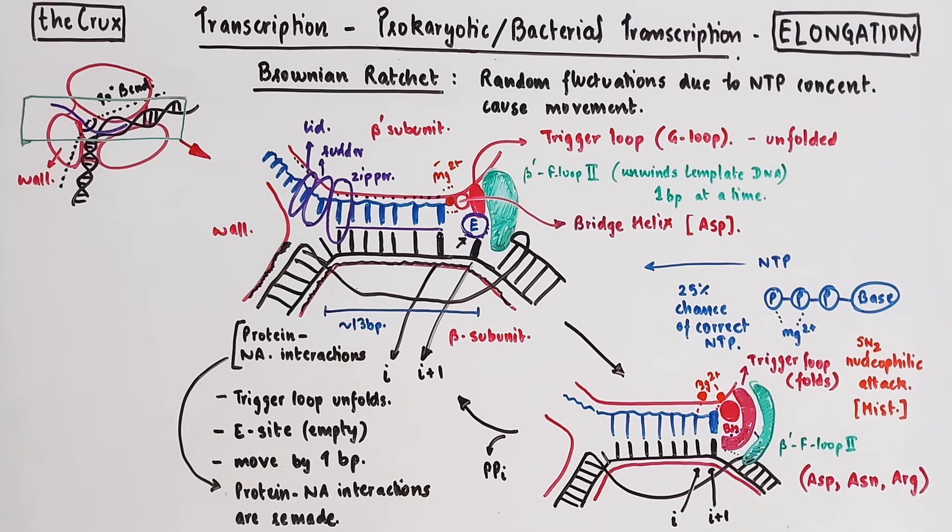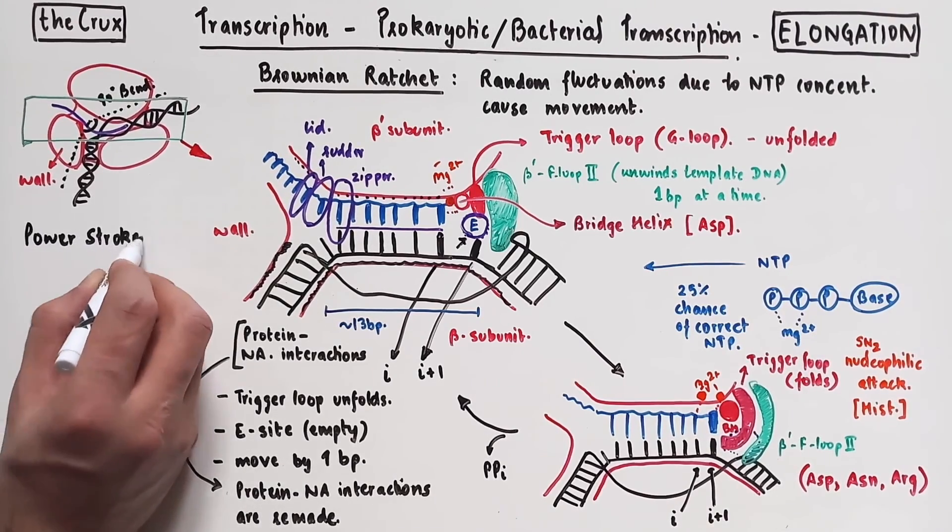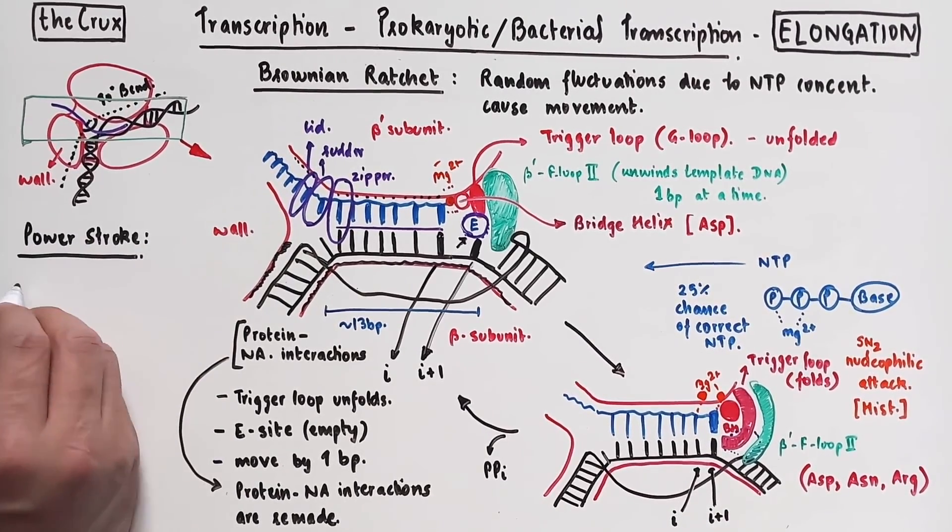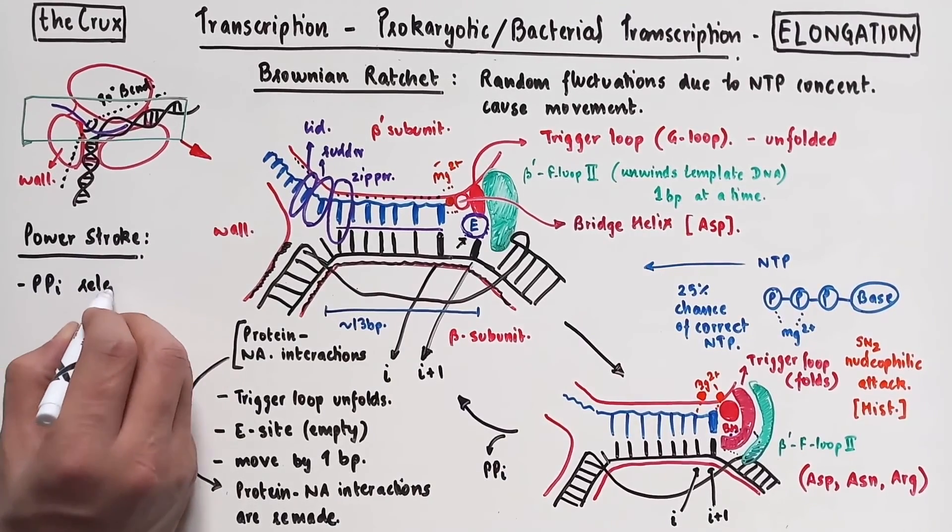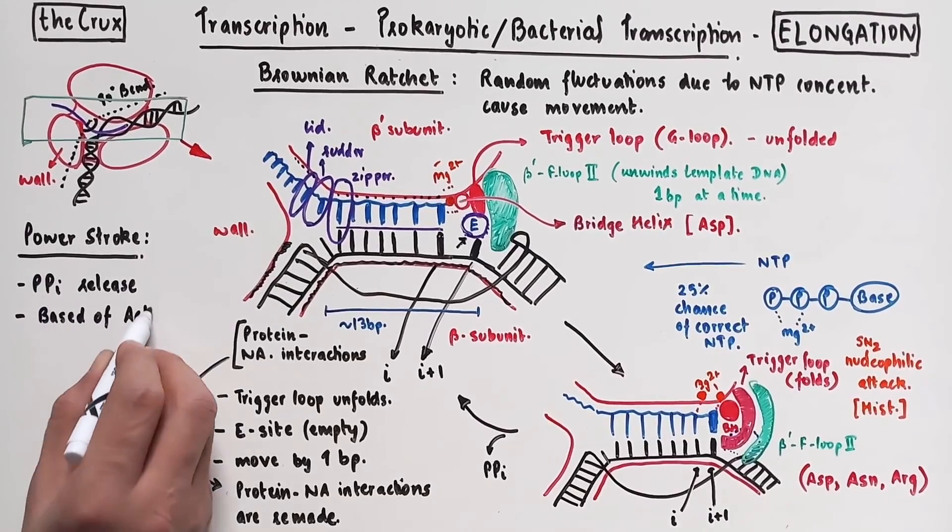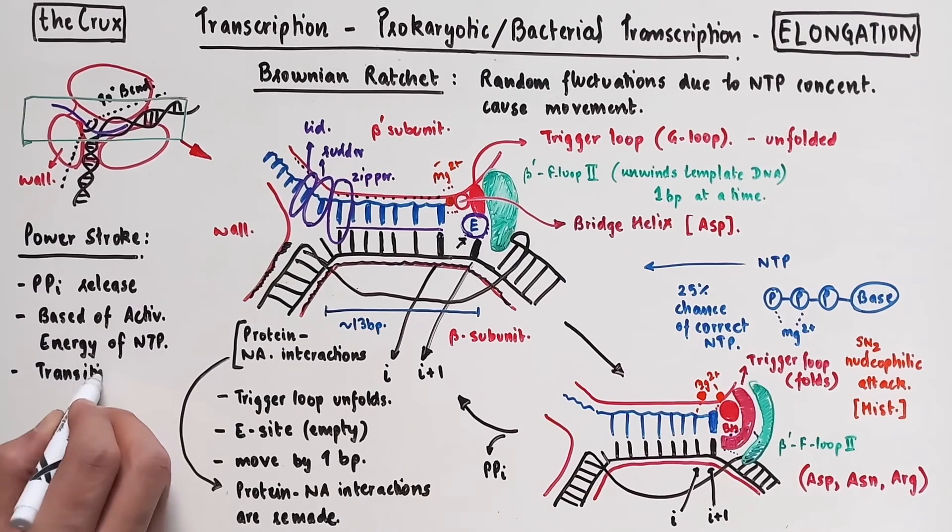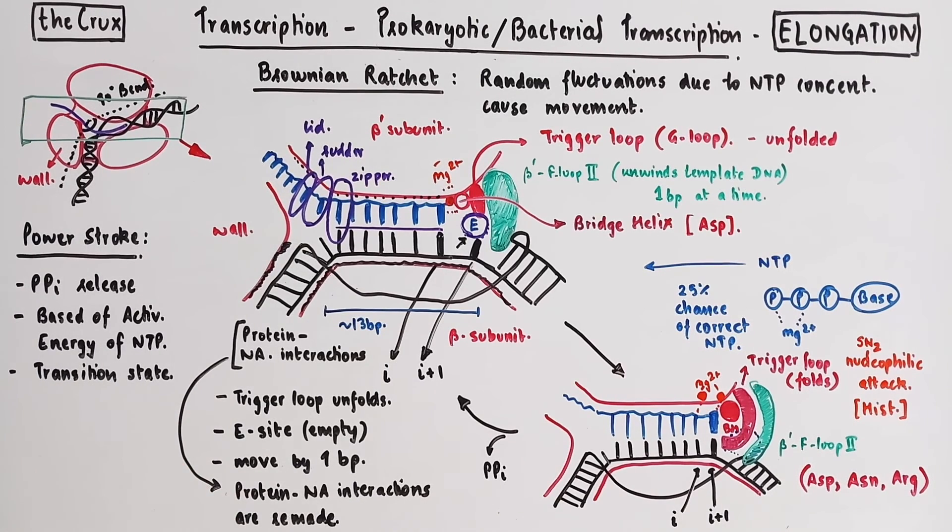However, there is another model which is a lesser known model, and this is known as the power stroke model of elongation, which simply states that pyrophosphate release and bond energy is enough to move the enzyme. It's based on the activation energy of the correct NTP binding. Therefore, in this power stroke model, we have transition stages in which the enzyme moves. The Brownian model does not have this transition state, but instead has this ratchet movement due to the sampling process at the E-site. So now you know how the enzyme moves during transcription.